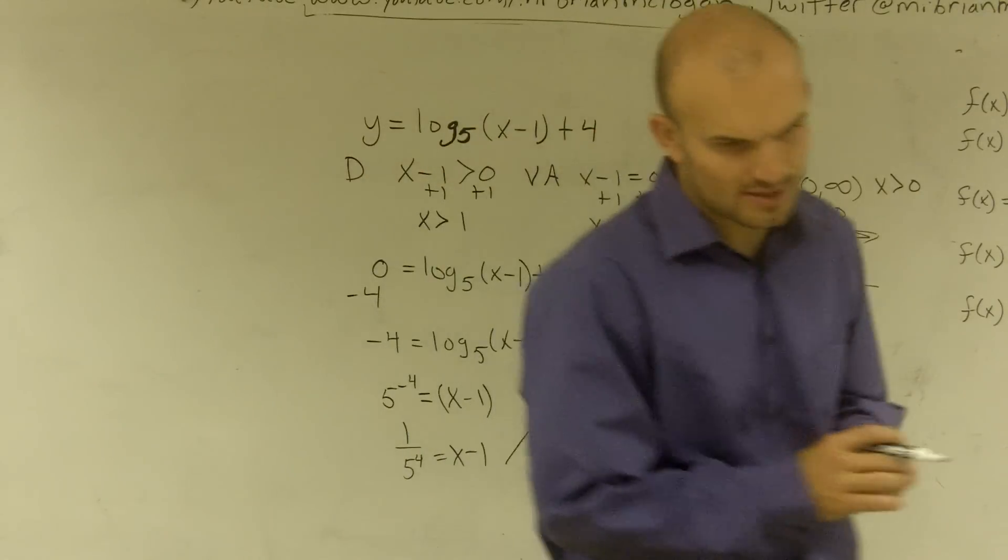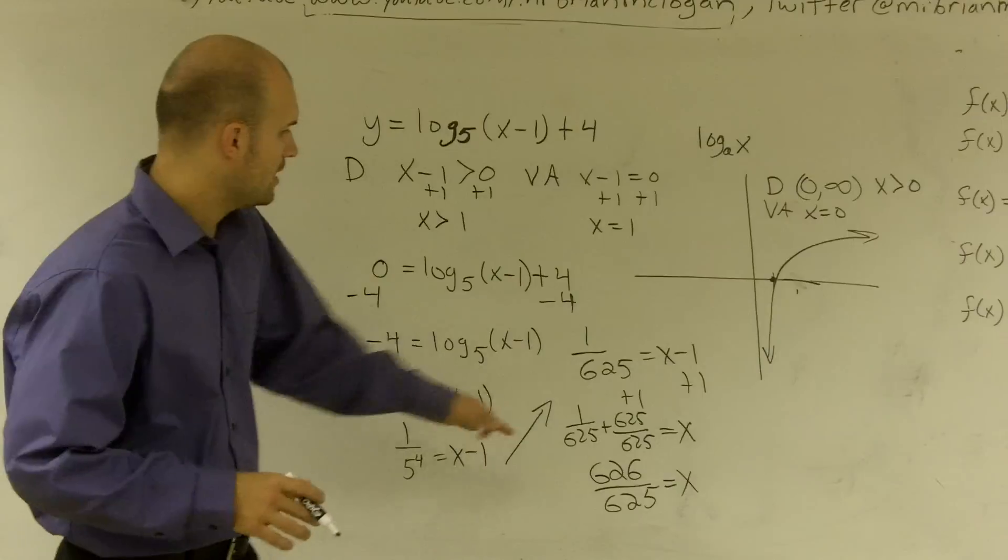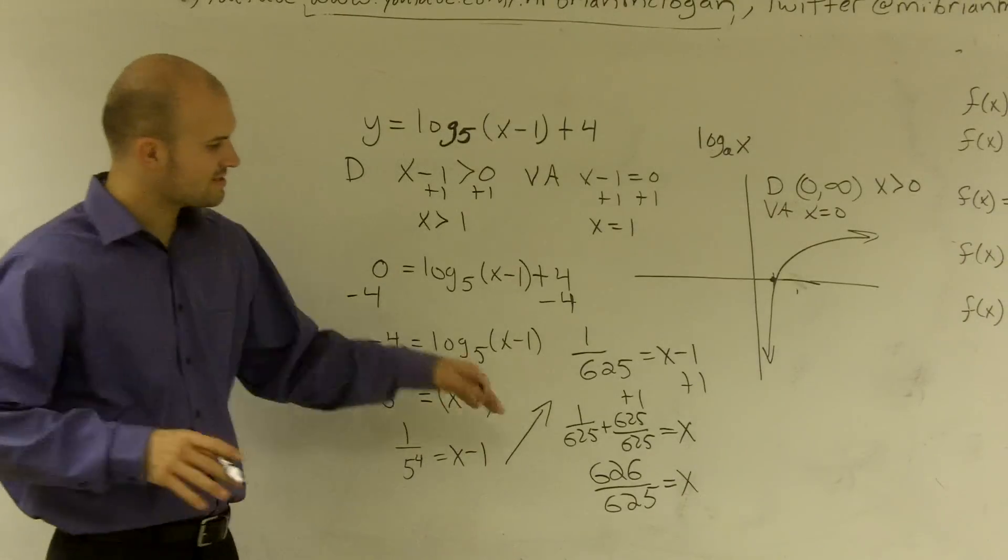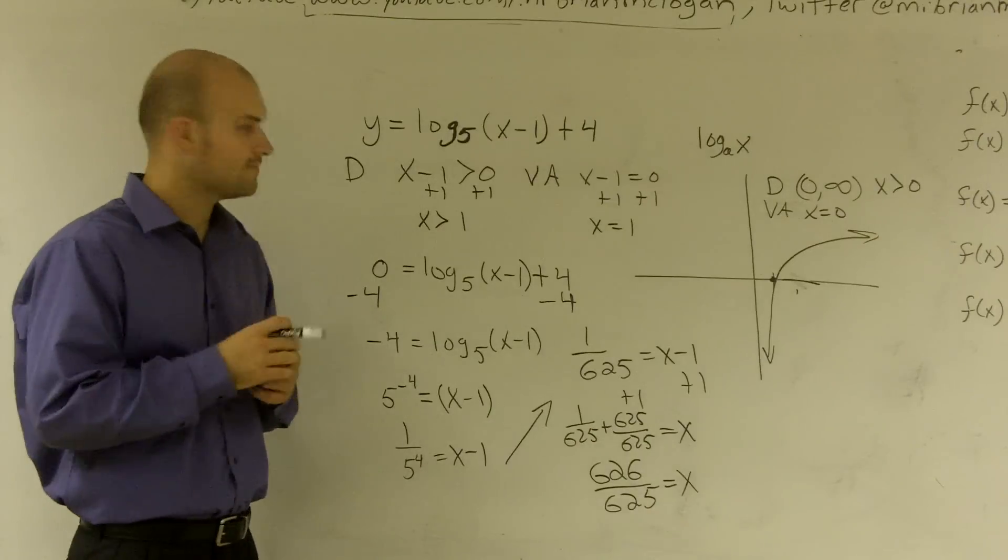And I believe that wasn't a negative, was it? Yeah, it wasn't. So therefore my final answer is 626 over 625. And there you go.